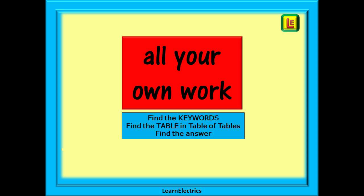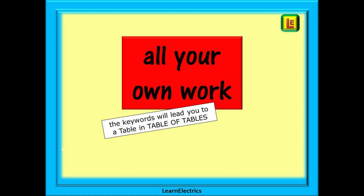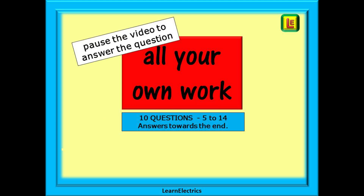The next 10 questions are all unaided — lots for you to attempt yourself. Follow the same principle that we have just done. All the tables can be found from pages 522 to 524. Find your keywords, find the table in the Table of Tables, and then find your answer. The keywords will lead you to the correct table. Everything starts from the Table of Tables on pages 522 to 524. After reading each question, pause the video and find the correct answer. There are 10 questions, numbered 5 to 14, and the answers will be shown towards the end of the video. The questions appear in no particular order — do attempt every question, it will definitely make your life so much easier in the exam.